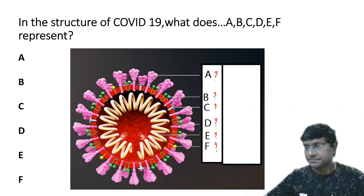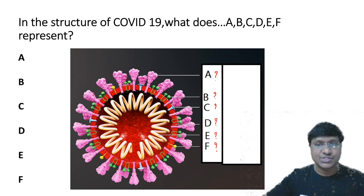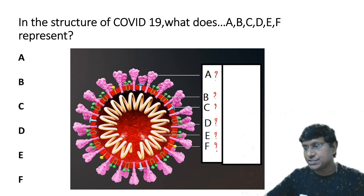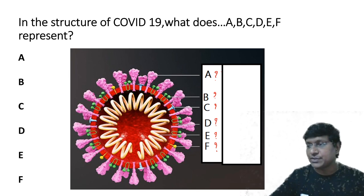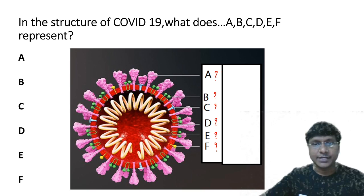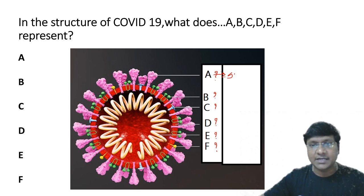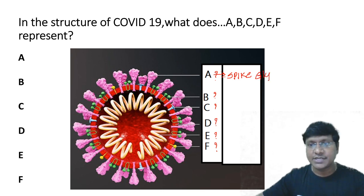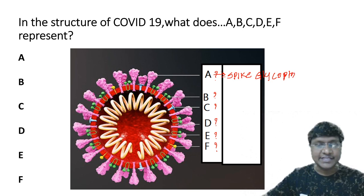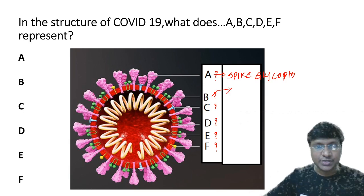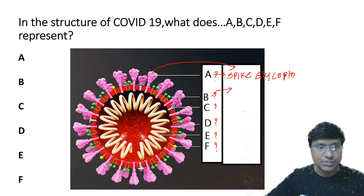What is structure A? Rather than calling it just glycoprotein, there is a specific name. A represents the spike glycoprotein — the word 'spike' is very important. The pink color one is your spike glycoprotein.